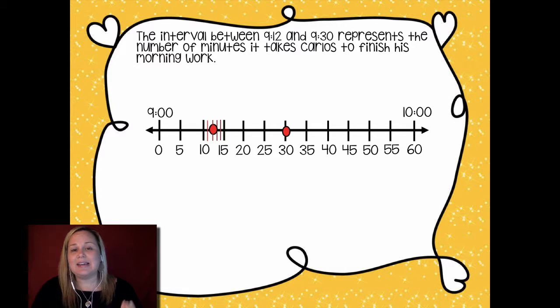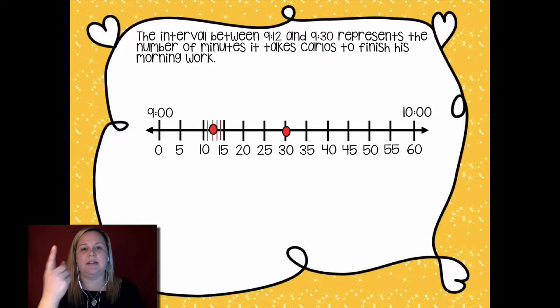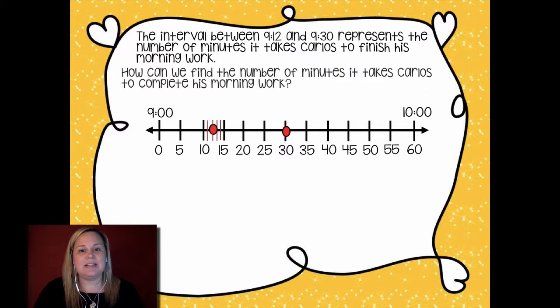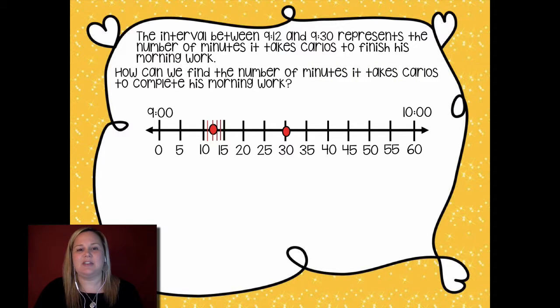That's where we get that 9:12 from. He started at 9:08. He had four minutes to write down his homework. So 9:08, 9:10, 9:11, 9:12. So that's where we're getting this 9:12. The interval between 9:12 and 9:30 represents the number of minutes it takes Carlos to finish his morning work. We need to find the number of minutes it takes Carlos to complete his morning work. How can we figure that out? What do you guys think? Yeah, we can count from here from this dot of 9:12 and kind of make those jumps like we just did in the last problem to get to 9:30.